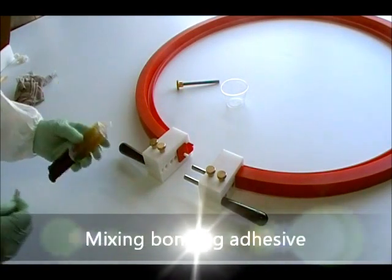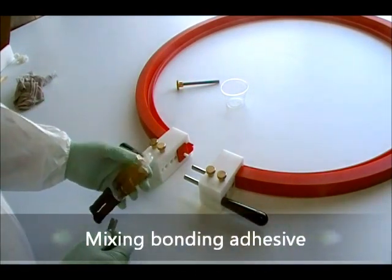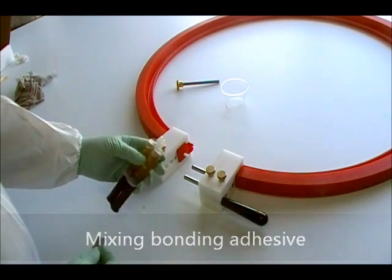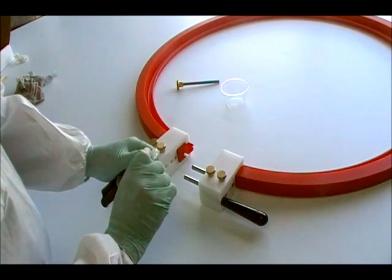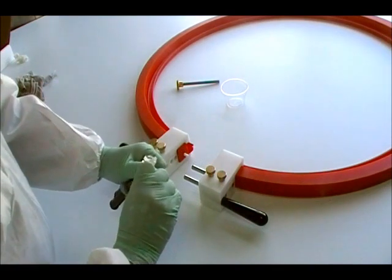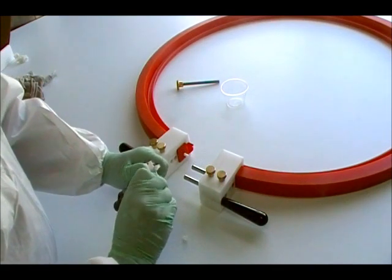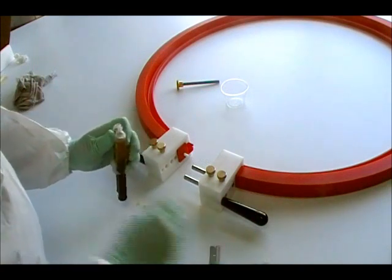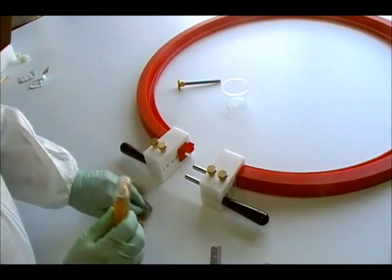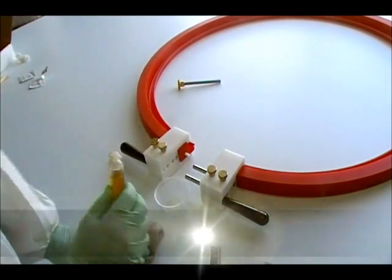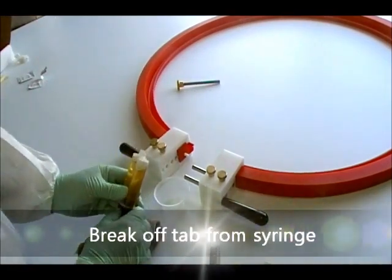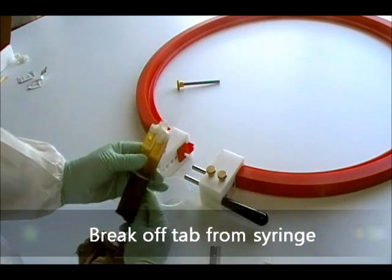Next, mixing the bonding adhesive. We are using a razor to remove the ends of the syringe. Break off the tab in the syringe and be careful of dripping adhesive.